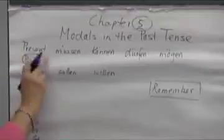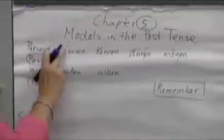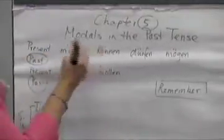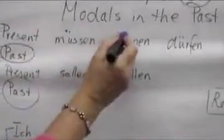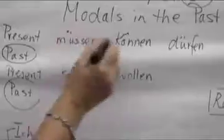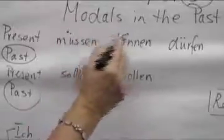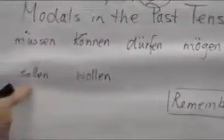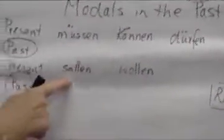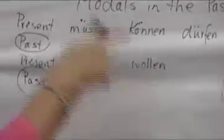In the present tense, you notice that all these modals had umlaut, right? Over the u — müssen — over the o, over the u again, over the o. The only ones that didn't were sollen and wollen.